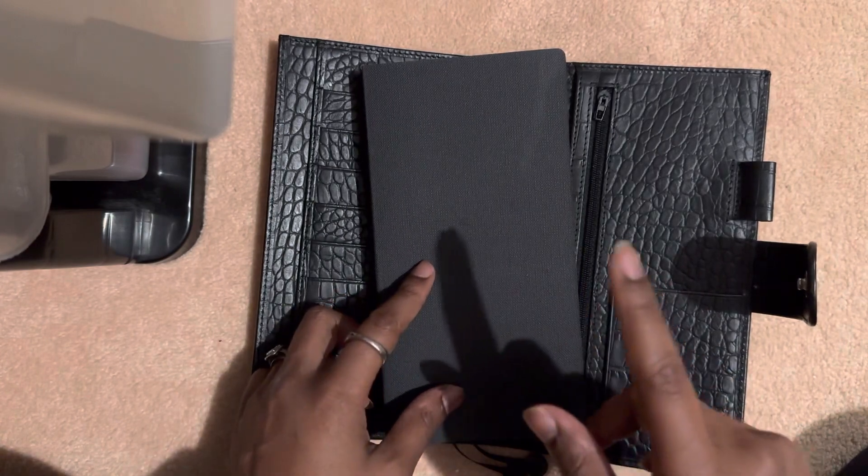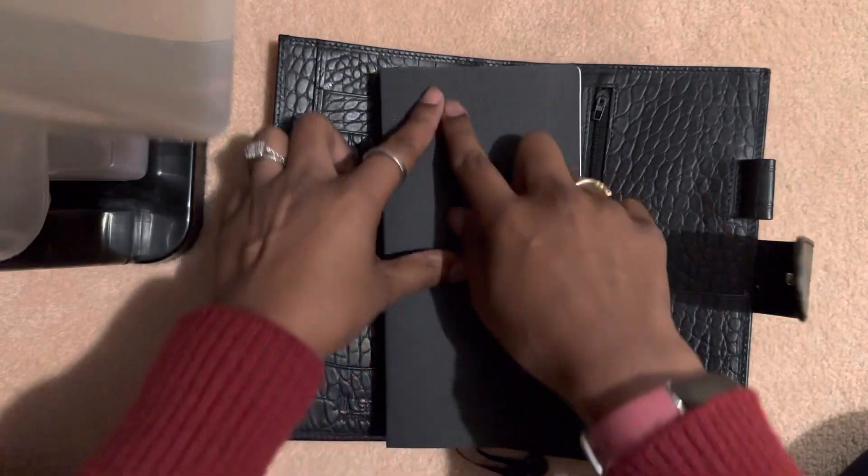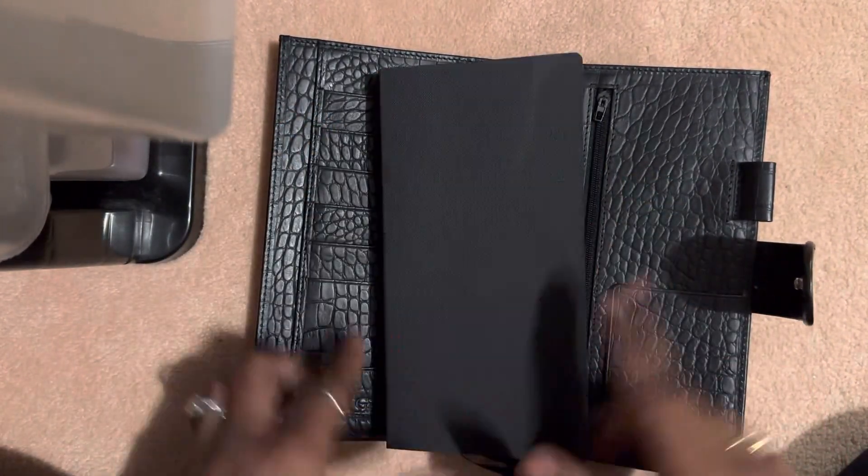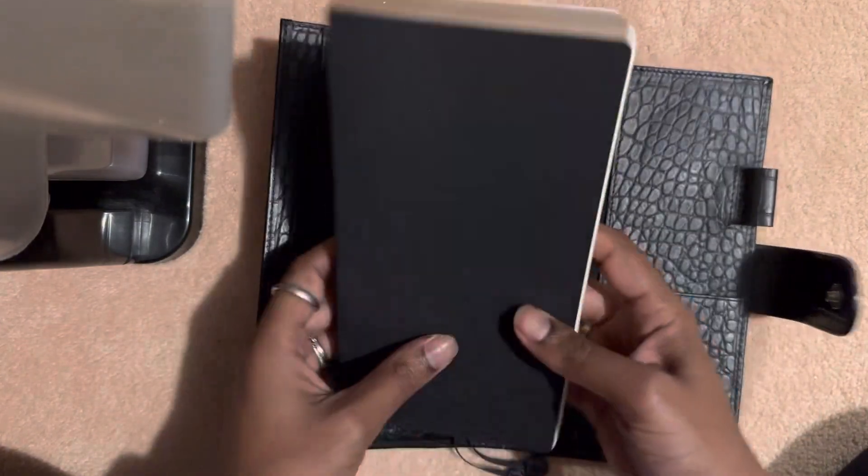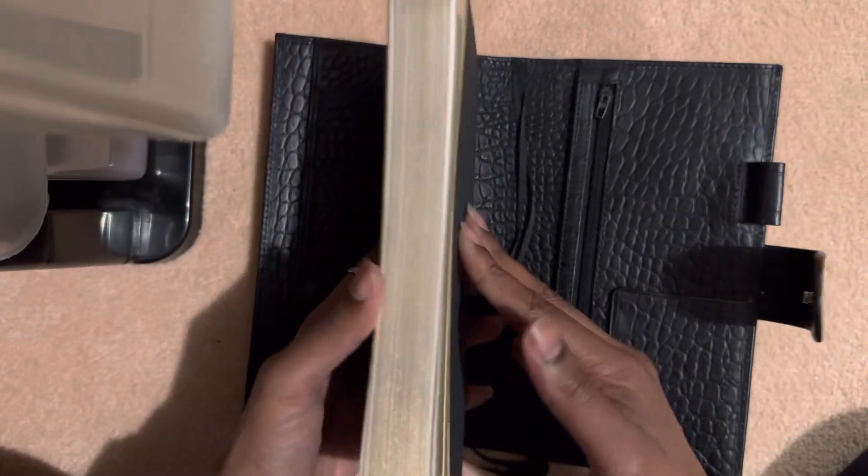So that ultimately means the paper is a little bit bigger than the paper in a Hobonichi Weeks because the paper comes all the way up to the end, and if you put like a hardcover Weeks on top it would be the same dimension. I hope that makes sense, which is kind of cool.